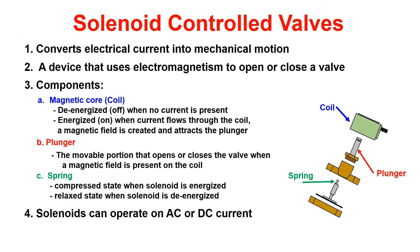Solenoid control valves are used to convert electrical current to mechanical motion. This device uses electromagnetism to open or close a valve. The valve is comprised of a magnetic core or coil, a plunger, and a spring. When an electric current is passed through the coil, a magnetic field is generated and the plunger is pulled in. When the current is removed, the solenoid is returned to its de-energized state by the spring.